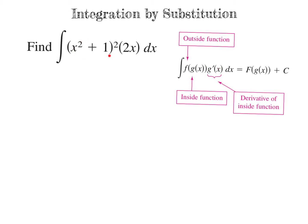Our outside function is something squared. That inside function — the thing that's being squared — g of x, is x squared plus 1. We know that because g prime of x is there: if g is x squared plus 1, then its derivative, 2x, is right here. So we've recognized g of x is x squared plus 1 and its derivative g prime is 2x, and it is also inside the integrand.